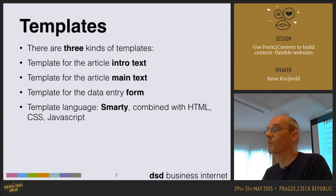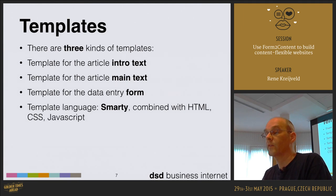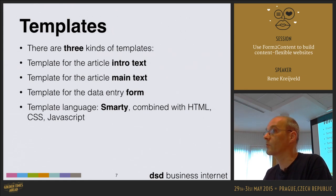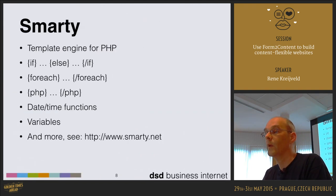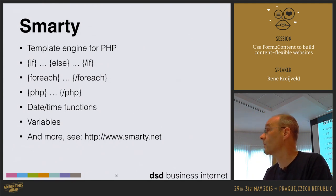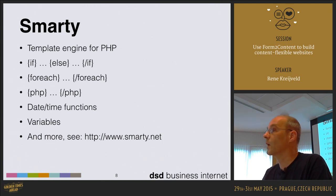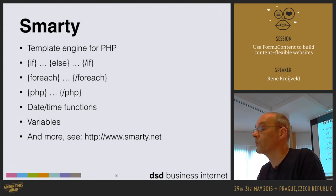Form2Content works with templates, and there are three kinds: a template that creates the article intro text, a template that creates the article main text, and templates to define your forms. You build these in Smarty combined with HTML, CSS, and JavaScript — that's what you do as a developer, your content editor doesn't need to be bothered with this. Smarty is a template engine for PHP; you can use if-then-else statements, foreach loops, include PHP inside the template, date-time functions, variables, and there's comprehensive documentation at Smarty.net.